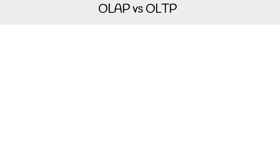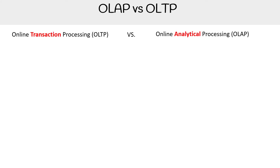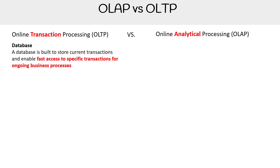Let's compare OLAP to OLTP — online transactional processing versus online analytical processing. When we're talking about OLTP, we're generally using databases. Databases are built to store current transactions and enable fast access to specific transactions for ongoing business processing.